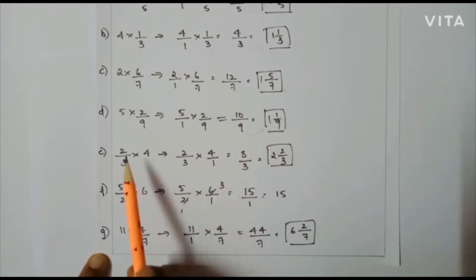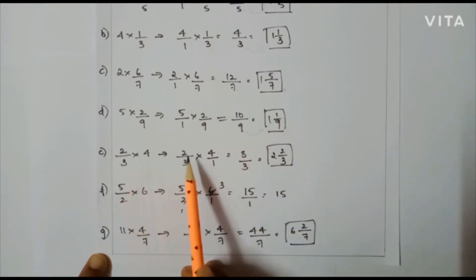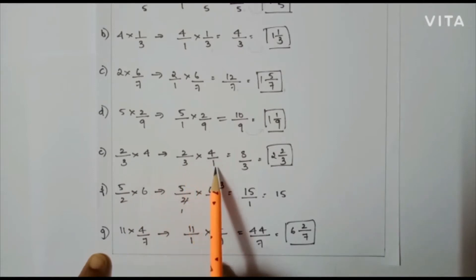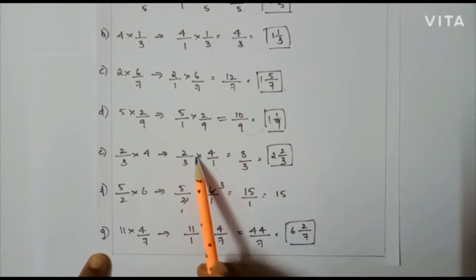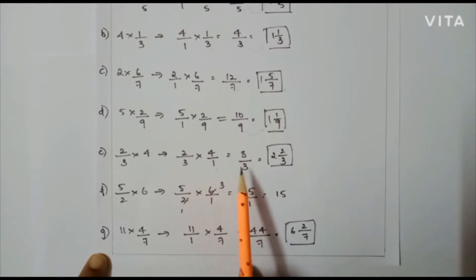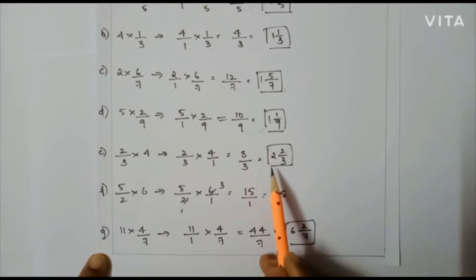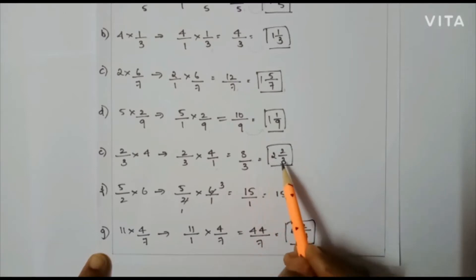Next problem: 2/3 × 4, that is 2/3 × 4/1. Here also I can't cancel. So 2 × 4 = 8 and 3 × 1 = 3. So the answer is 8/3. If I convert this to a mixed fraction I will get 2 and 2/3.